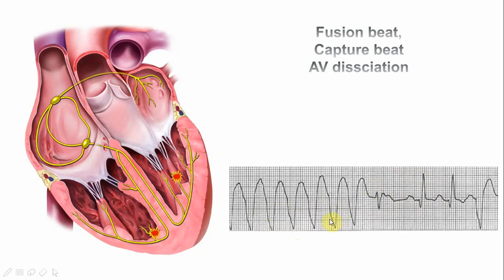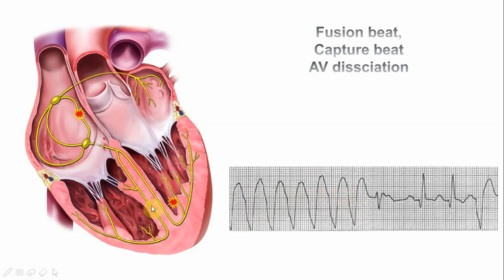These ventricular ectopics are coming at a rate of about 150 beats per minute and have pretty good concordance — we cannot identify a clear R wave or S wave. The classic presentation shows: (1) no relationship between atrial and ventricular activity, (2) possible capture beats, and (3) possible fusion beats. If these are present, this is very diagnostic of ventricular tachycardia.